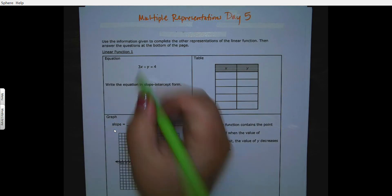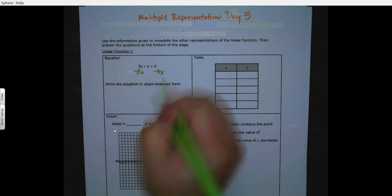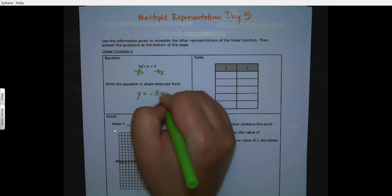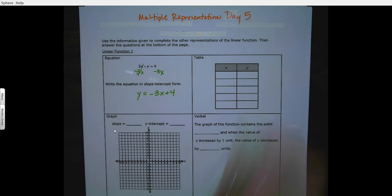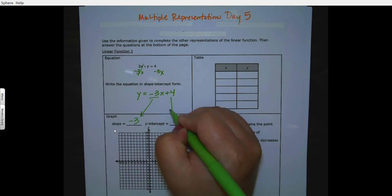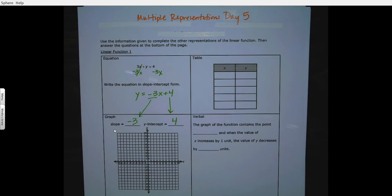I need to actually write that in slope-intercept form, so I'm going to subtract 3x first and now I have y equals negative 3x plus 4. So I know my slope is negative 3 and my y-intercept is 4.